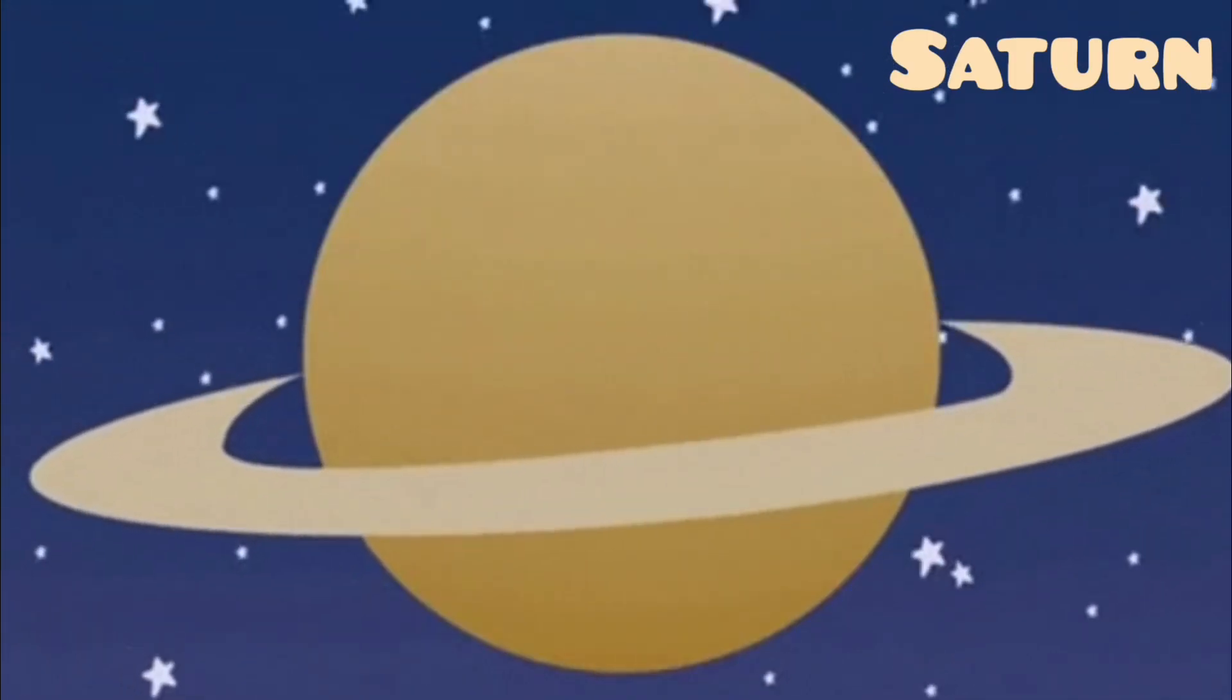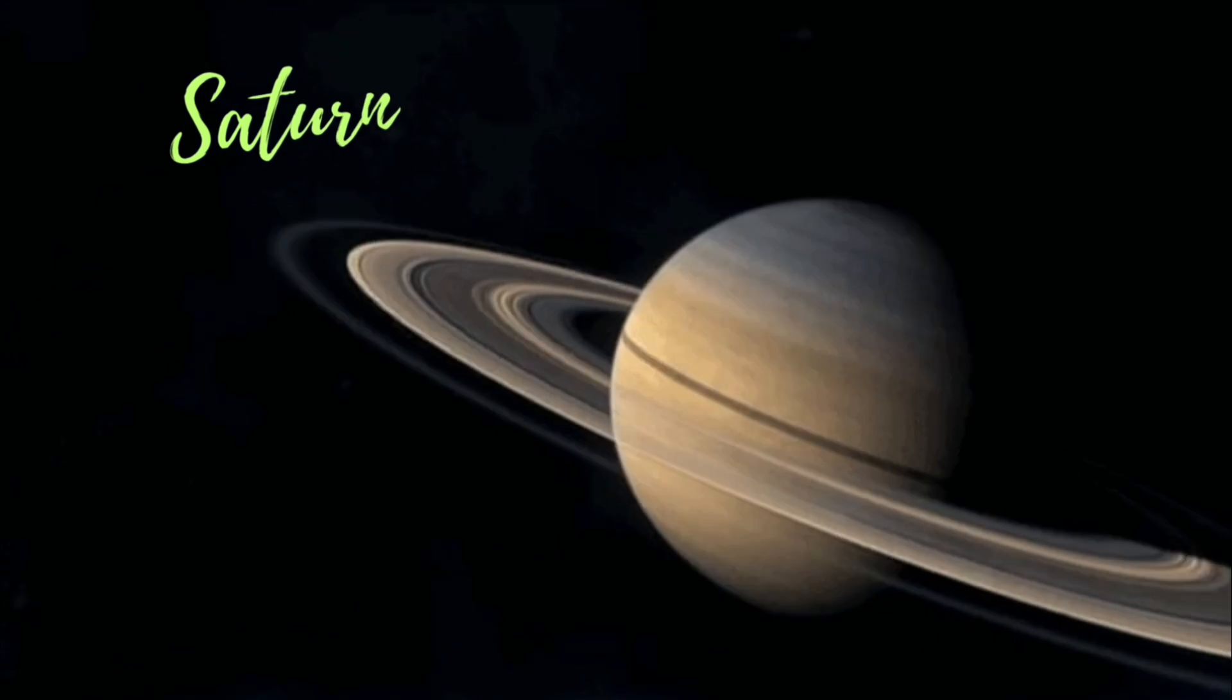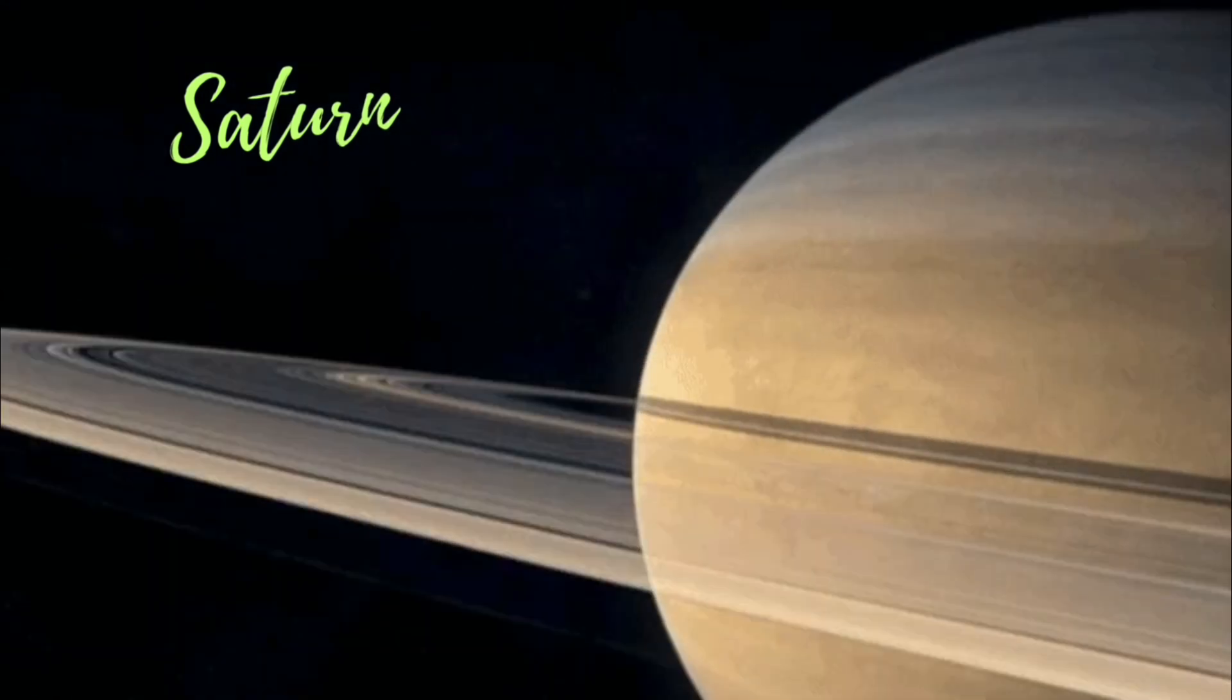Saturn is famous for its beautiful rings made of ice and rocks that go around the planet. It's like a cosmic hula hoop.